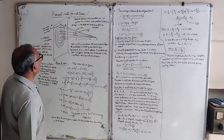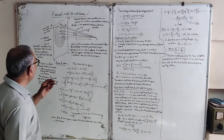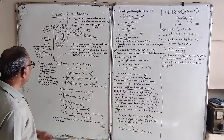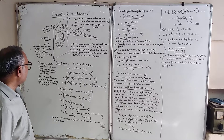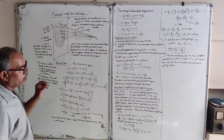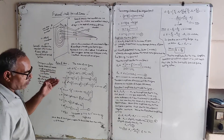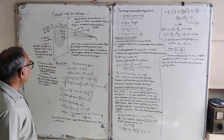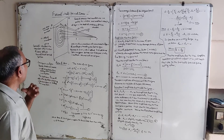Today we are going to discuss Fresnel half period zones. If we have a monochromatic light source, each point sends out waves in all directions, setting ether particles into vibration. The continuous locus of all ether particles vibrating in the same phase is called the wavefront — primary wavefront, secondary wavefront, and so on. Fresnel divided the wavefront into a number of zones called the Fresnel half period zones.